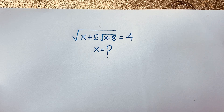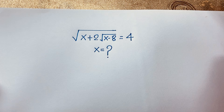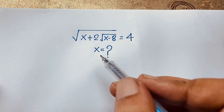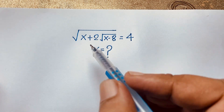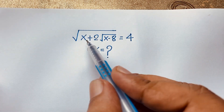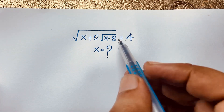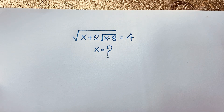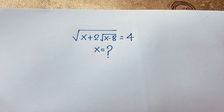Hello everyone, welcome to Russia's Classroom. Today we are solving a nice radical math question. It is an Oxford entrance exam question. The question is: square root of (x plus 2 square root of (x minus 8)) is equal to 4. What is x? How do we solve this math problem?